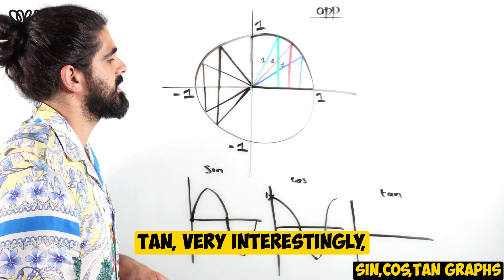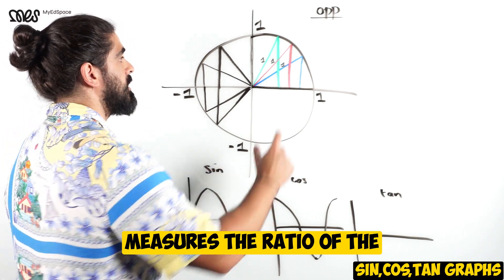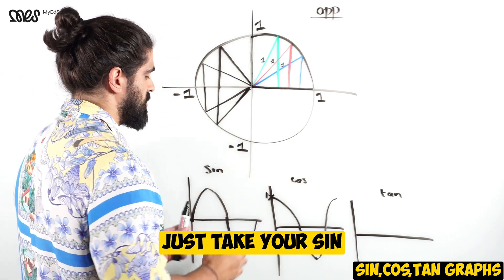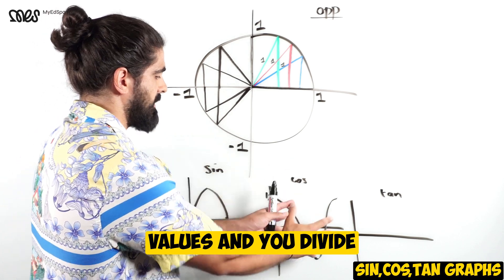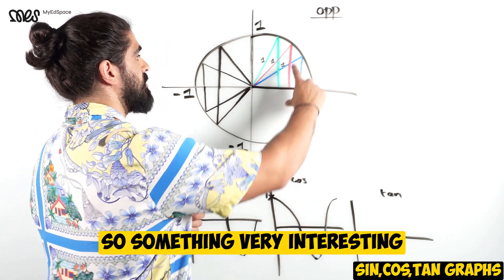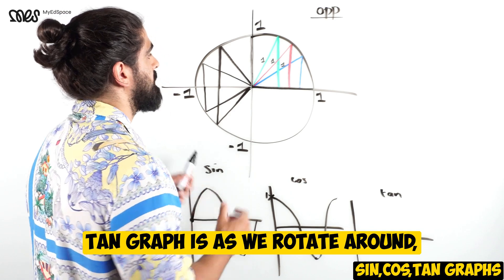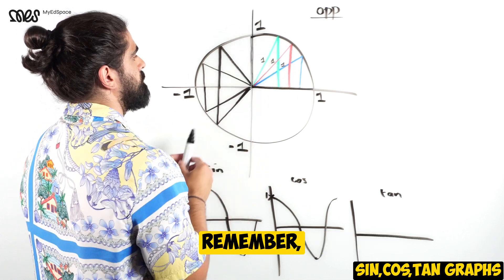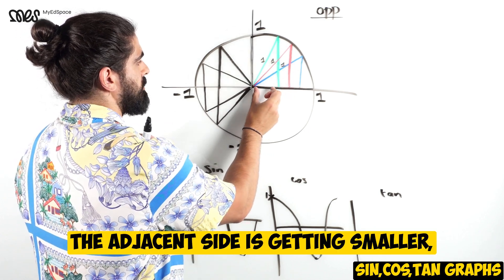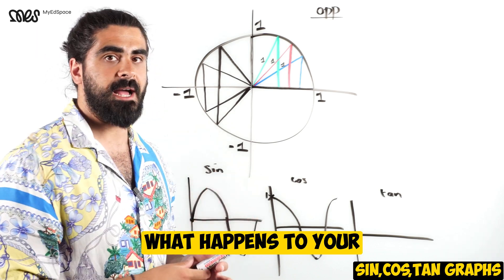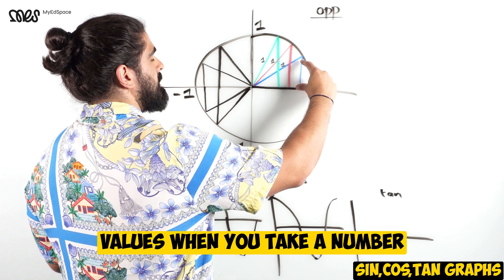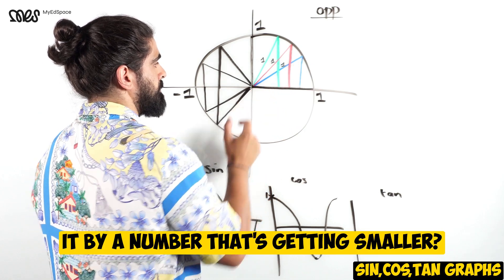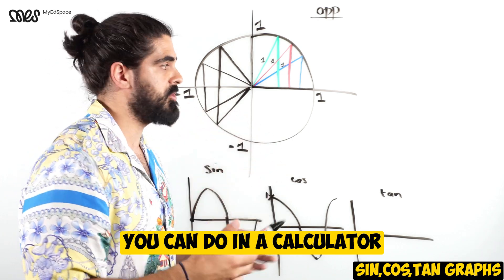Tan, very interestingly, measures the ratio of the opposite side divided by the adjacent side. So you just take your sine values and divide it by the cosine values. Something very interesting happens with the tan graph. As we rotate around, the adjacent side is getting smaller. What happens when you take a number and divide it by a number that's getting smaller? The value gets larger.